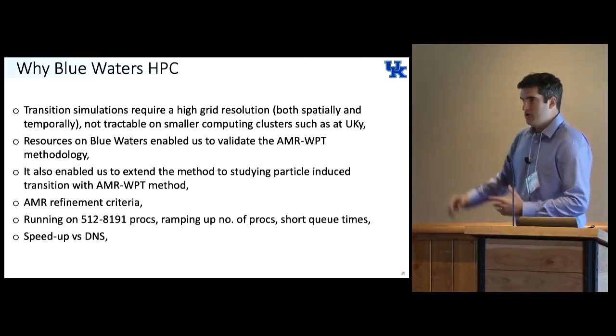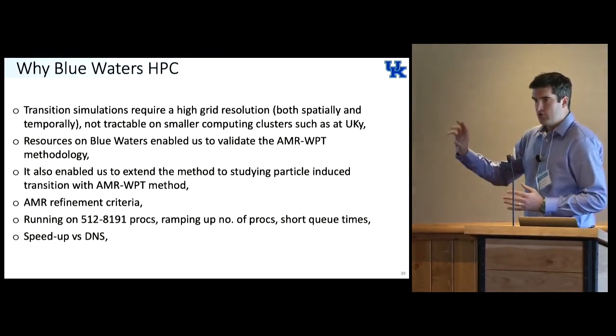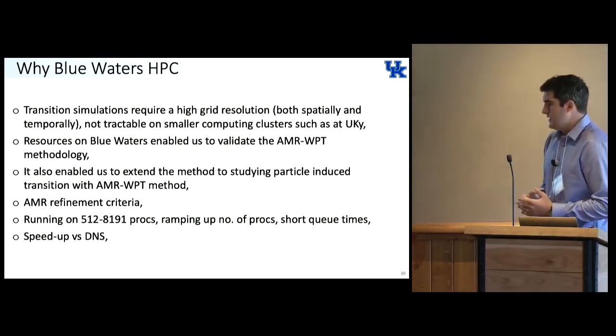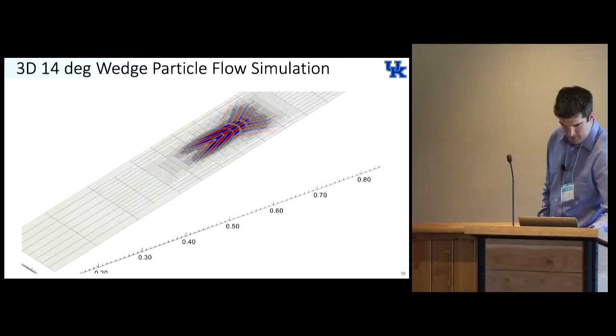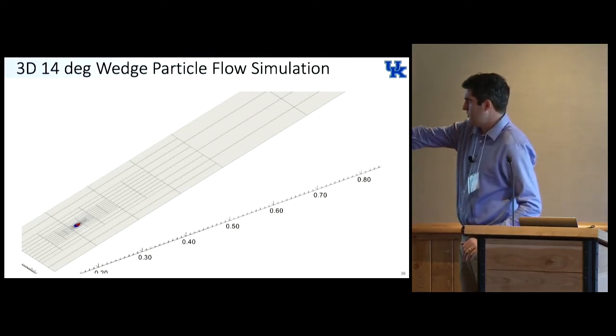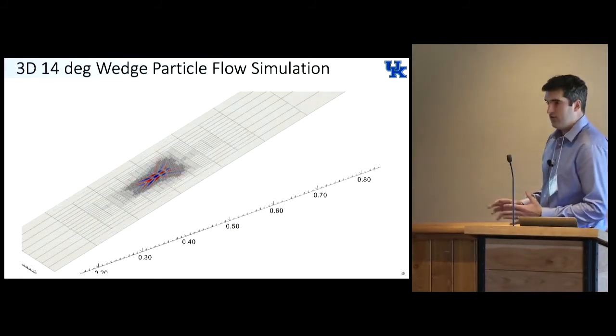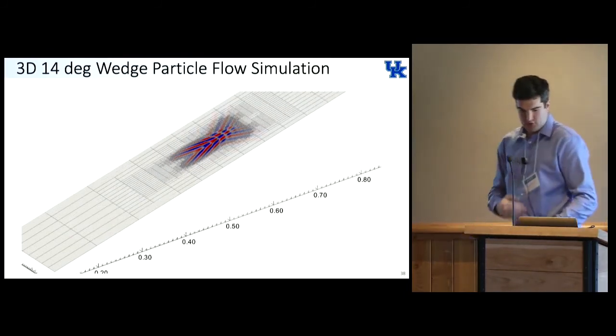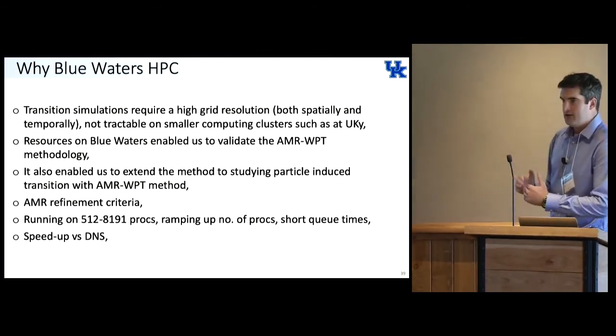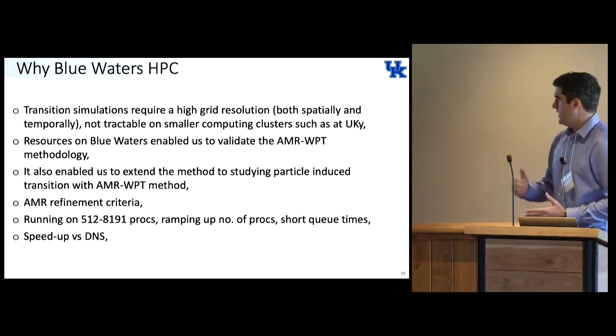As you can imagine, to get the AMR refinement optimally working and tracking, we had to tweak the refinement parameters and play around with some things and see what worked and see what didn't. Another thing that helped is, from the animation, the number of grid points at the first few time instances is completely different to the number of grid points I'm now using at this point. When we start the simulation, maybe we use 512 or 1024 processes. Then as the simulation goes on, we can start ramping up and then get the simulation back in the queue quickly and use a large amount of resources.